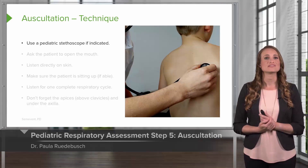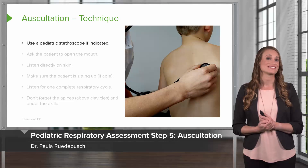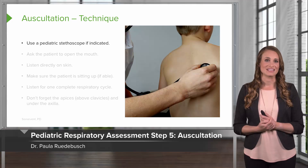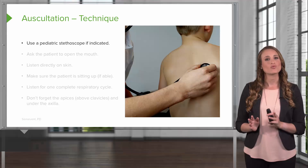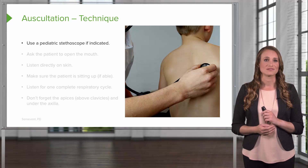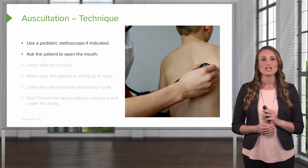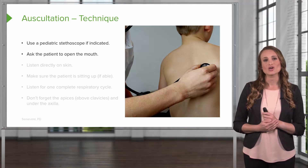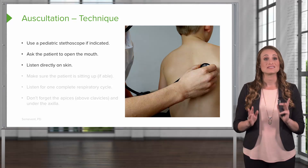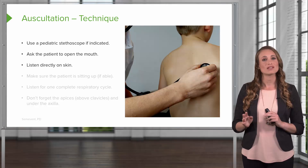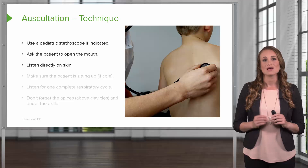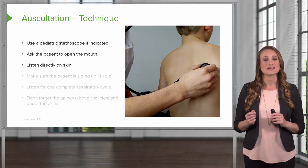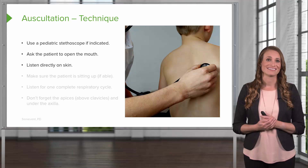The technique involves using a pediatric stethoscope if indicated. If the tool is too big, you won't be able to isolate the breath sounds. You'll ask the patient to open their mouth, and you're going to listen directly on their skin. You don't want to be listening over a gown or clothing, because this can cause sounds similar to rhonchi.